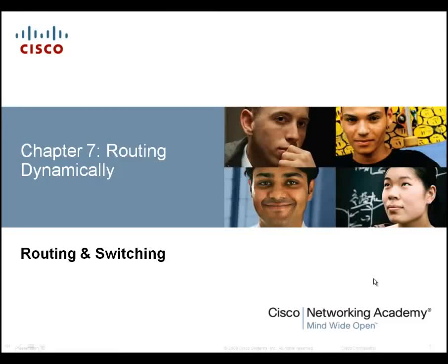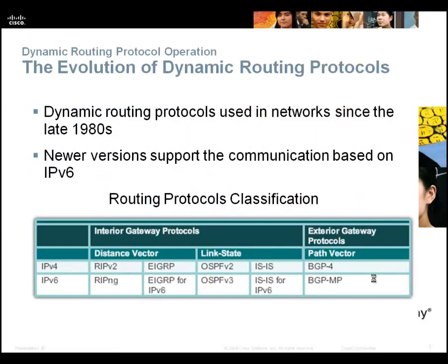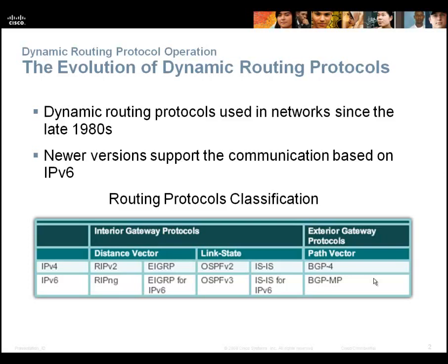Welcome to Chapter 7, Routing Dynamically. Way back in the day, we did classful routing, so we routed by classful IP addresses — you could only have an A, B, or C. Then RIP, the Routing Information Protocol, was introduced. After RIP, Cisco came up with IGRP, Interior Gateway Routing Protocol, and that really caught on. Later they improved it and called it Enhanced Interior Gateway Routing Protocol. Then OSPF came out. So there are all these different routing protocols that we use.